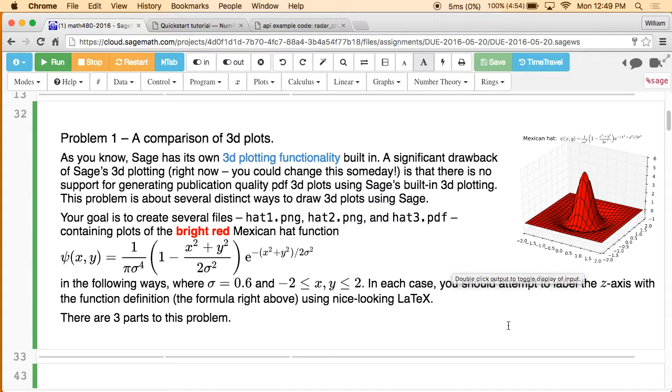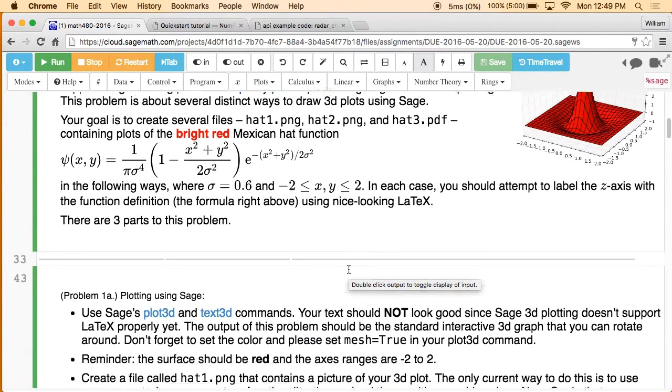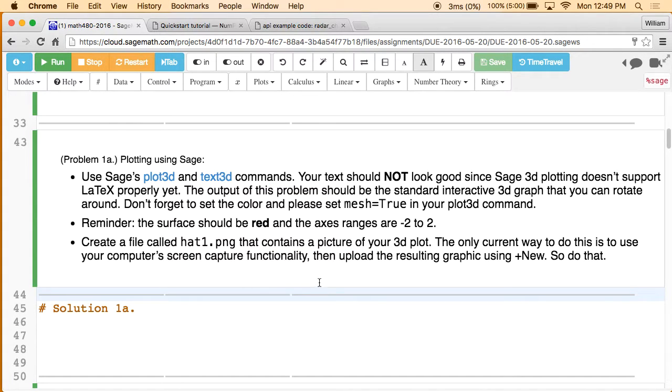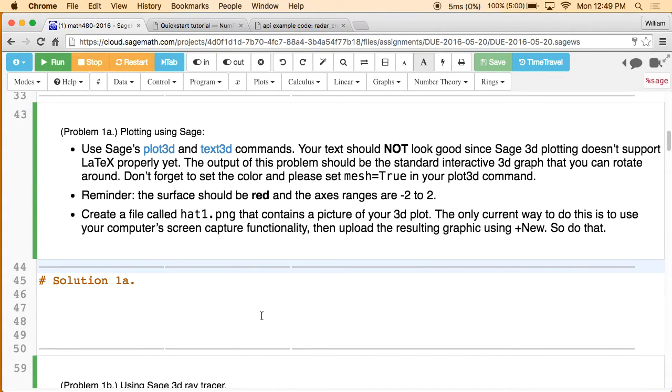In this problem, you're going to return to the Mexican hat that you remember from a while ago, and you're going to try to draw a plot of it, including the formula for the hat. You'll draw it first using Sage's normal 3D plotting. This part is almost exactly like something you've done before, except you're going to put a label somewhere using text to show the formula in the picture. And as you can see where I said not, the text should not look good. It's going to look really bad, because there's no support in 3D in Sage for directly drawing LaTeX.